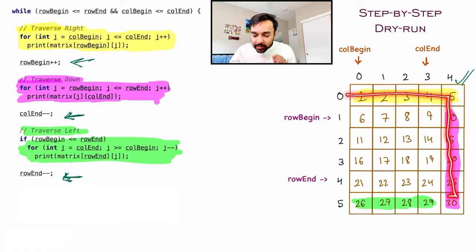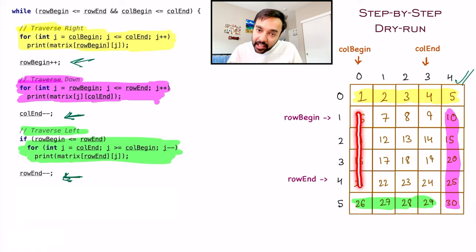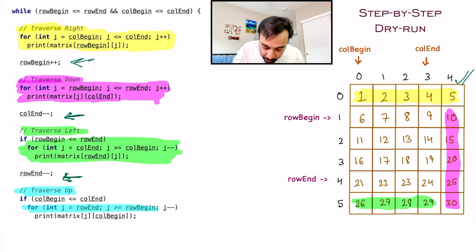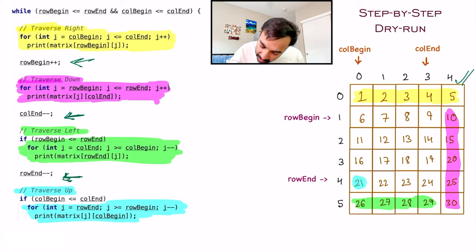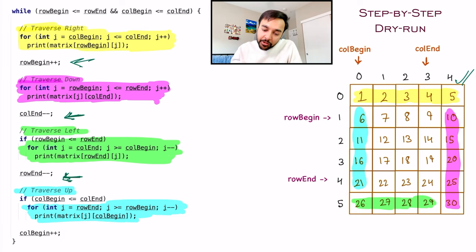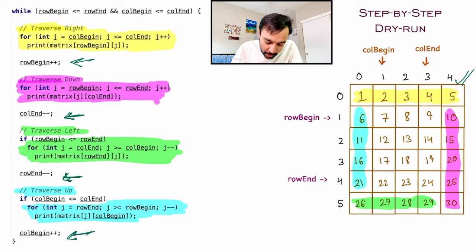Now you must know what to do next — traverse upward. You start at row_end and end at row_begin with a decrement. When this loop runs, it prints 21, 16, 11, and 6. You have taken care of all elements in column_begin, so you increment it — column_begin now points to 1, by doing column_begin++.